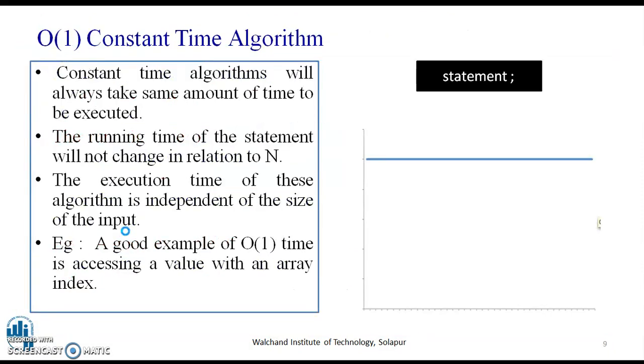O(1), that is constant algorithm. Constant time algorithms will always take same amount of time to be executed. The running time of the statement will not change in relation to n. The execution time of these algorithms is independent of the size of the input. That is, a constant resource need is where the resource need does not grow. I mean, the execution time of this algorithm is independent of the size of the input.